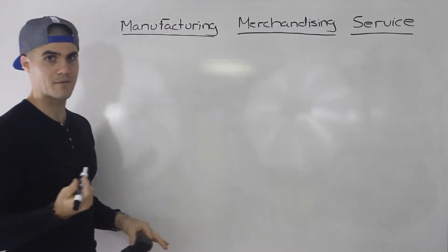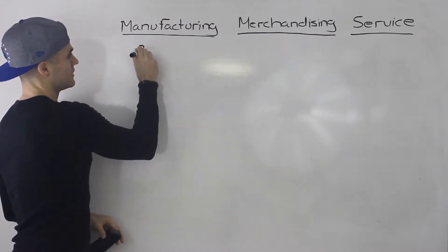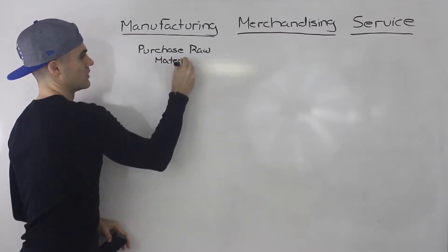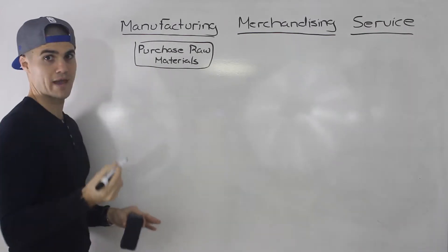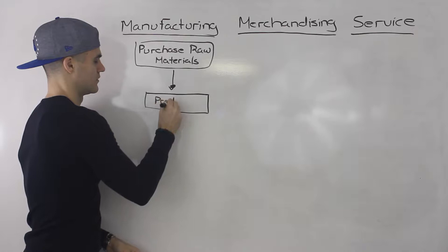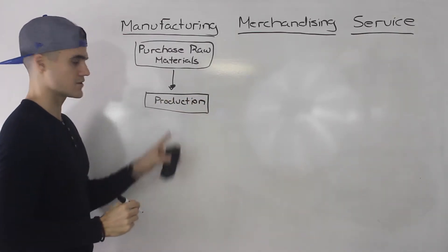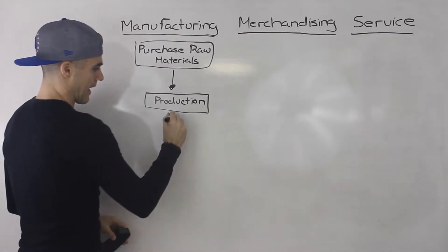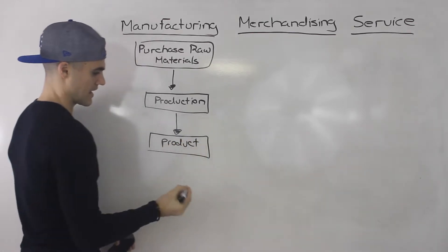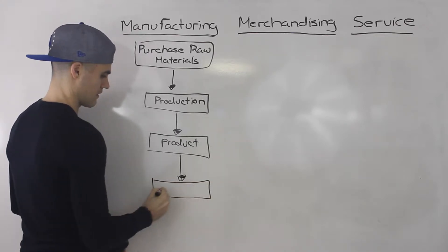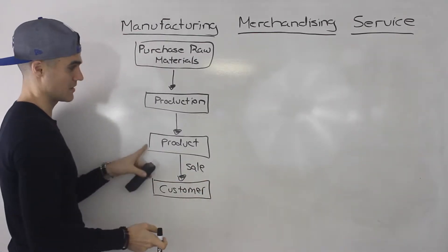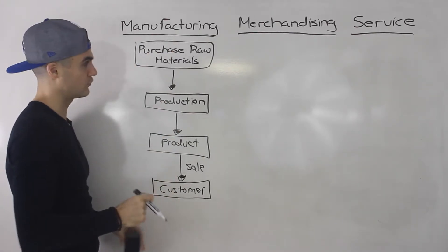So let's start off with a manufacturing company. What happens with a manufacturing company? You're going to go and purchase some raw materials to make a product — that's usually step one. Then these raw materials go into production, into some kind of factory. After production, you finally have a product that you could sell. Then there's a sale, and the customer ends up with the product. So that's the general flow for a manufacturing company.